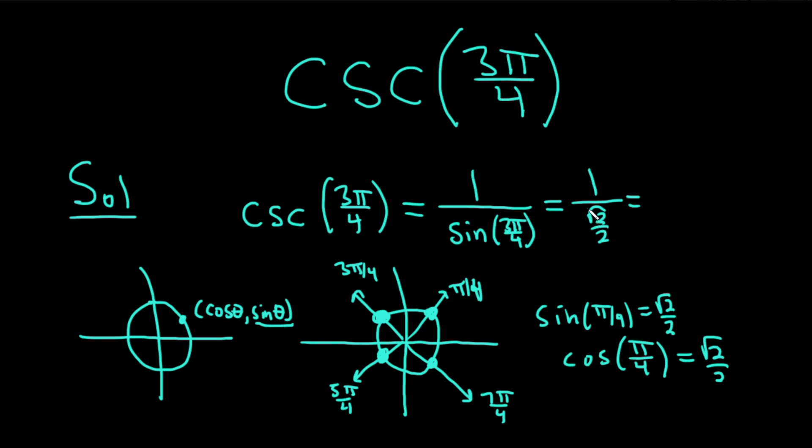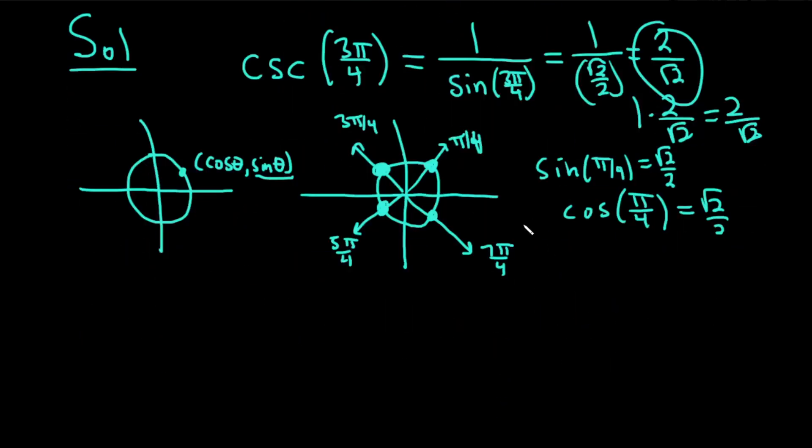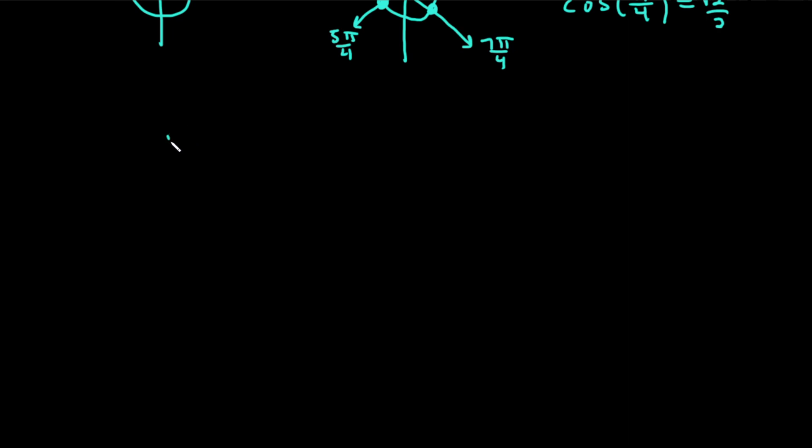So 1 divided by this is really 1 times the reciprocal. So this will be 2 root 2. Basically just flip it because it's 1 times 2 over root 2, which is 2 over root 2. And that would be the answer.